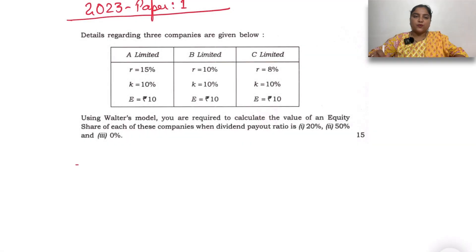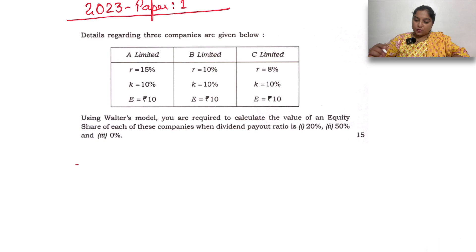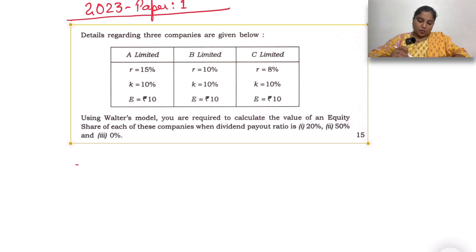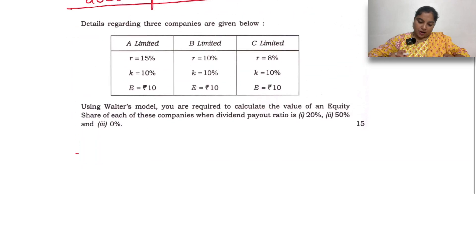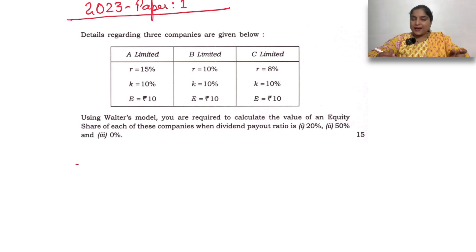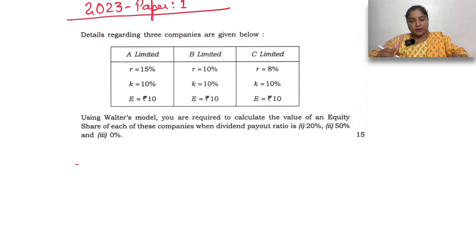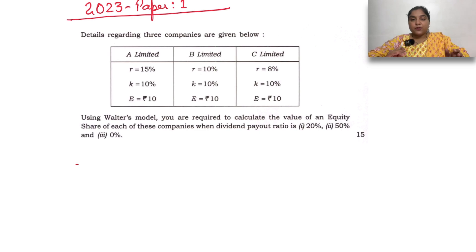Hello everyone, let's solve one more article — previous year 2023 question number 8B. We are going to discuss this question and then jump into the solution. Details regarding three companies are given — r, k, and e respectively for A Limited, B Limited, and C Limited. Using the Walter model, you are required to calculate the value of an equity share when the dividend payout ratio is 20%, 50%, and 0% respectively.